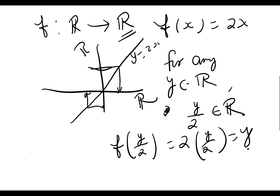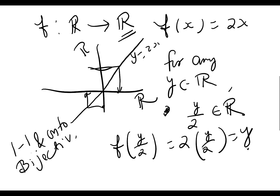If a map is both one-to-one and onto, we call it a one-to-one and onto map, or we may also use the term bijective.